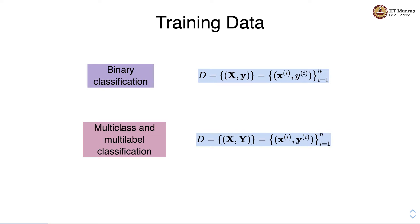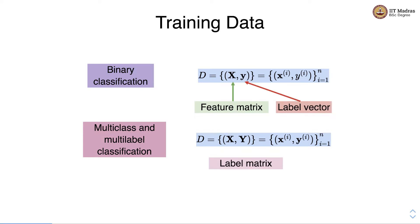In multi-class, every example has a single label, but since the multi-class setting is mostly represented as one-hot encoding, we get multiple values of which only one is 1 and the rest are 0. In that sense, the multi-class setup also has a label vector for every example. So we have a feature matrix and a label vector in binary classification, and in multi-class classification we have a feature matrix and a label matrix, with a label vector for every single example.